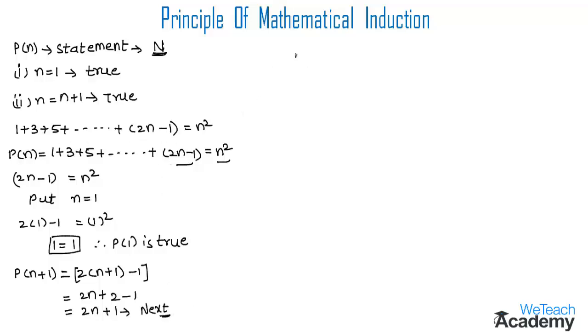By adding the next term (2n + 1) on both sides of the statement P(n), we get 1 + 3 + 5 + ... + (2n - 1) + (2n + 1) = n² + 2n + 1.